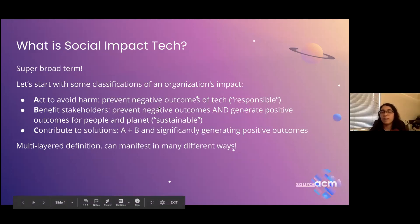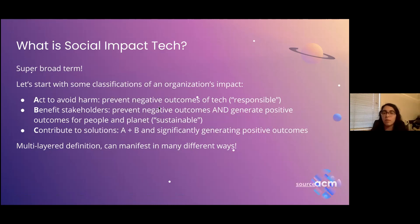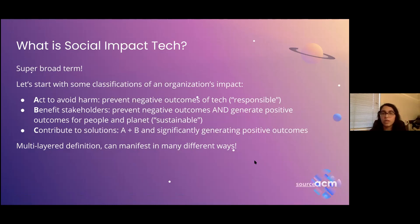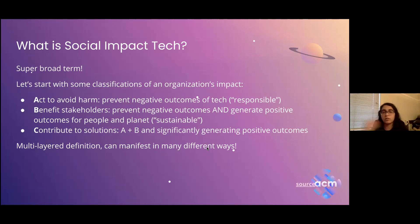We wanted to start off by defining what social impact tech is. We wanted everyone to start on the same foot so you know what to expect from these workshops. We can start with some classifications of what an organization's impact can look like. The source we found separates it into an ABC: A is acting to avoid harm — if a company prevents negative outcomes of tech, that's called responsible tech, but you're not contributing to positive ones either.